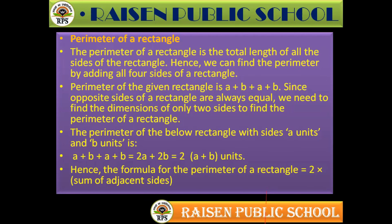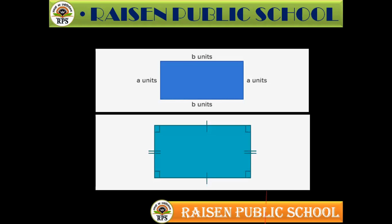Now let's move to the perimeter of a rectangle. The perimeter of a rectangle is the total length of all the sides of the rectangle. Hence we can find the perimeter by adding all four sides of a rectangle.